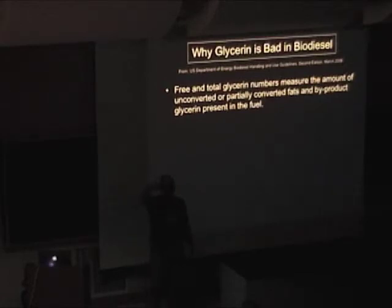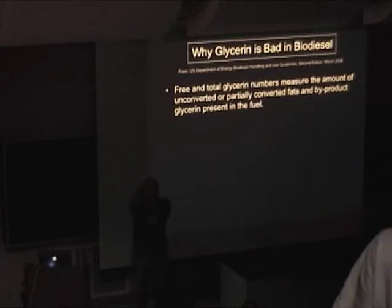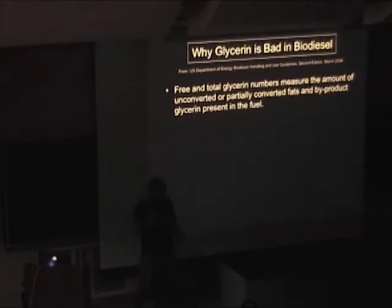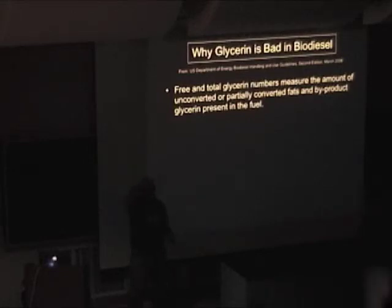Bound glycerin — mono has 0.2591 percent of the weight as glycerin. A dye is like 0.15 percent because you've got more weight on that arm. So when you see GC results, the spec is 0.240 total glycerin. It's how much is free — the stuff you wash out, because it's water soluble — and what is bound, meaning it's a mono, a dye, or a tri. Tries are unreacted oil. Incomplete conversion leads to high total glycerin.